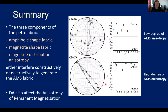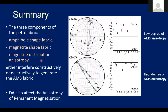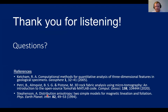In summary, three petrofabric components contribute to the AMS fabric, and they either interfere constructively — strengthening the degree of anisotropy — or destructively, weakening it. Importantly, distribution anisotropy also appears to affect the anisotropy of remanent magnetization, meaning the spatial distribution of magnetite seems to influence remanence fabrics as well, which I believe has not been shown before.